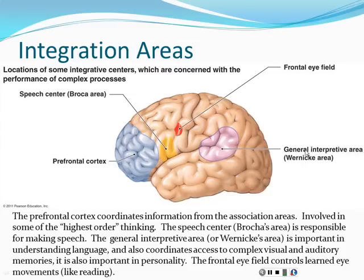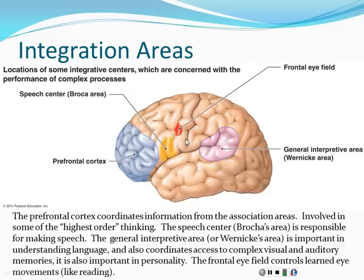Wernicke's and Broca's areas are very well described and commonly appear on board exam questions — commit them to memory. Broca's area creates speech; Wernicke's area receives and understands speech. There's also a frontal eye field in the frontal lobe that controls learned eye movements — like scanning a page while reading — as opposed to instinctual eye movements.